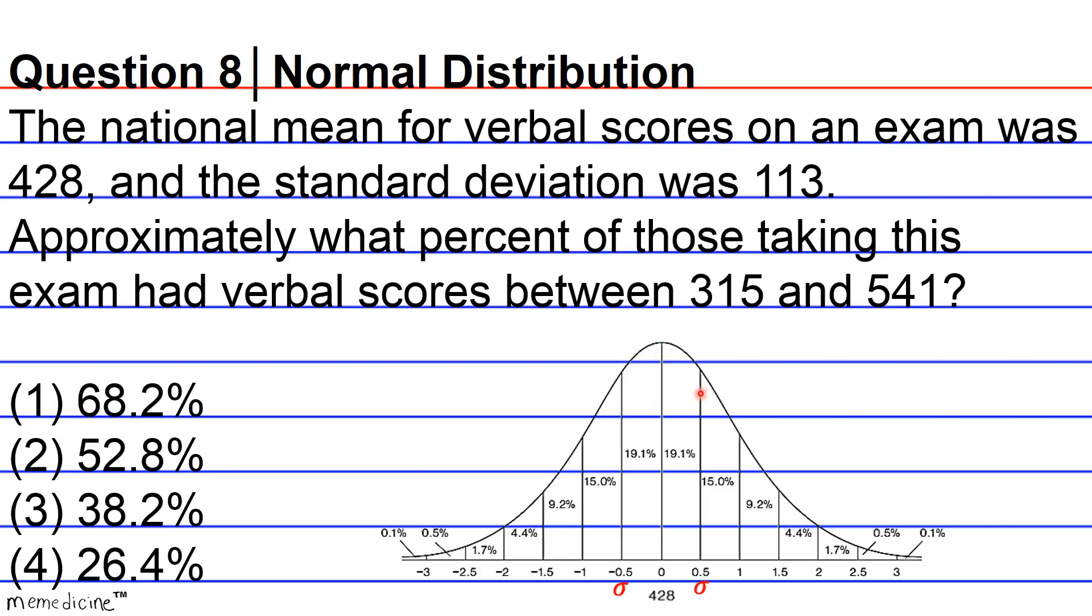And let's see what else we can do with this. So 113 is our standard deviation. So if we want to know what number is one standard deviation below 428, or one standard deviation below the mean, we're going to do a calculation of 428 minus 113 to get a score of 315.